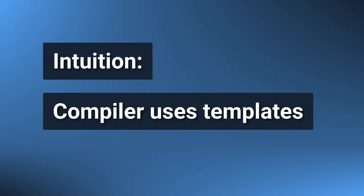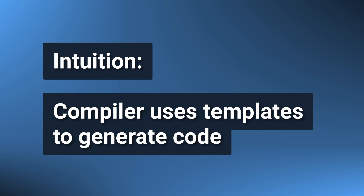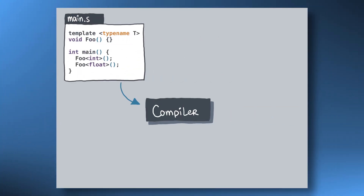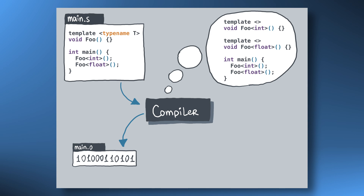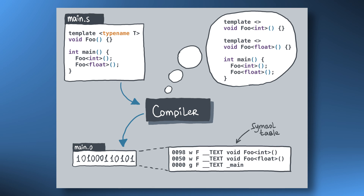The intuition is that the compiler uses templates to generate code, which also explains their name. A function, struct, or class template is just that — a template for a normal function, struct, or class. To be slightly more precise, let us illustrate what happens to a simple function template foo during the compilation process. Anytime the compiler encounters a call that it associates to a template, it instantiates a concrete specialization of that function, substituting all of its template arguments for the actually used types. Such specializations are then compiled into their binary form and behave just like normal functions. If we inspect the resulting object file, we will see all of our concrete functions in it.